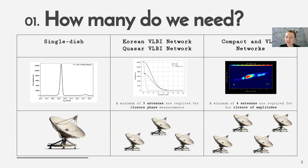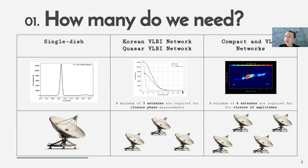Let's go further and have, for example, three antennas. That's a pretty limited interferometer, but we have some real examples — like the Korean VLBI network or the Quasar VLBI network. With a minimum of antennas, we can achieve phase closure, so it's already a very limited kind of interferometer. We can already observe something, but you won't really get a nice image. Still, you can measure some things — for example, there are different baselines, the distance between antennas, and you can check how flux of the target source changes with baseline length.